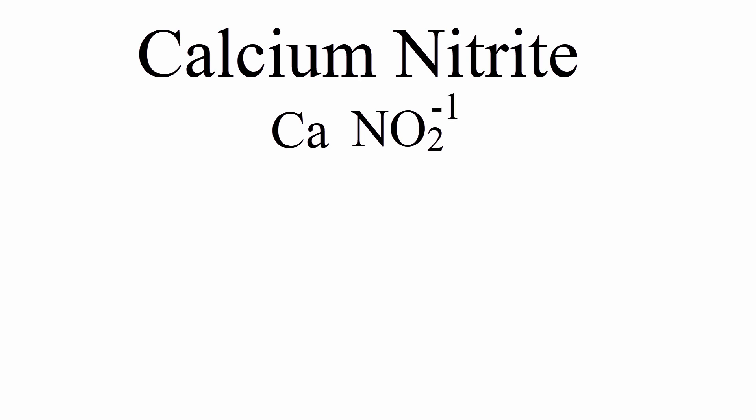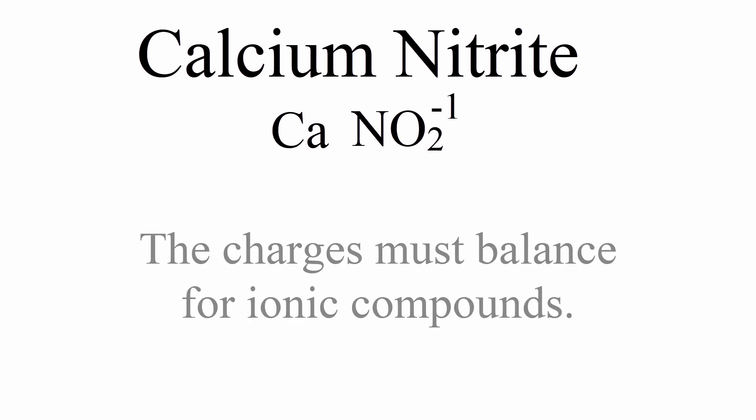So we have calcium, Ca, from the periodic table. And from the polyatomic common ion table we have NO2, the nitrite ion. At this point we need to think back and use that negative charge on the nitrite ion so that we can correctly balance the charges for this ionic compound.